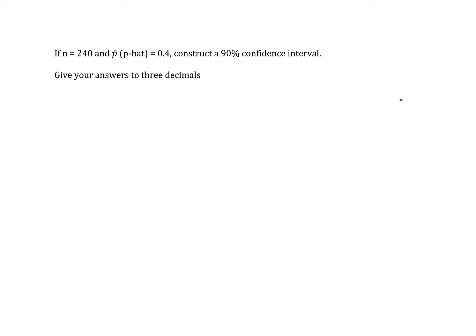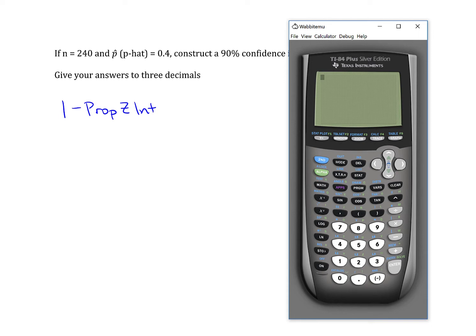So to use the calculator, there's a function that creates confidence intervals for proportions, which is 1propZint. It takes a few inputs. Let's open up the calculator and take a look. If you hit STAT and go over to TESTS and come down to 1propZint, it needs a number of items that favor your event, a number of items out of your sample total, and a level of confidence.